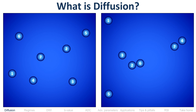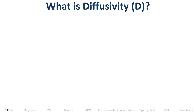These water molecules are moving randomly, and I cannot predict — nor can anyone, not even Tanya Wilson — predict where they're going to be, although she might be able to put some kind of probability cloud around it. So that's diffusion: random motion. What is diffusivity? Diffusivity, or D, is a physical parameter.